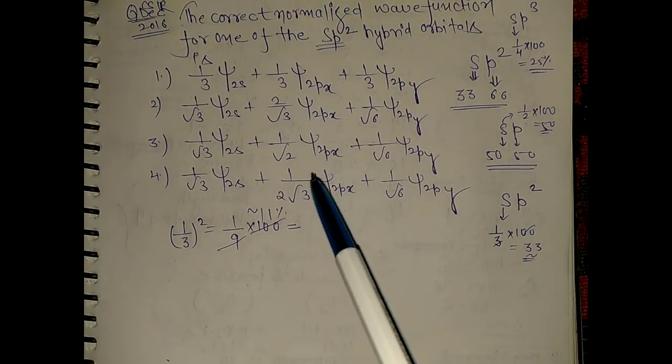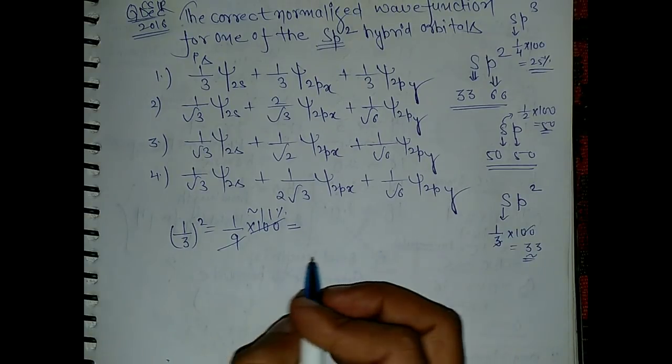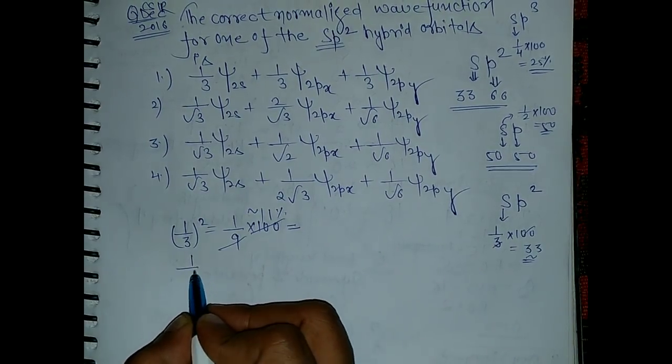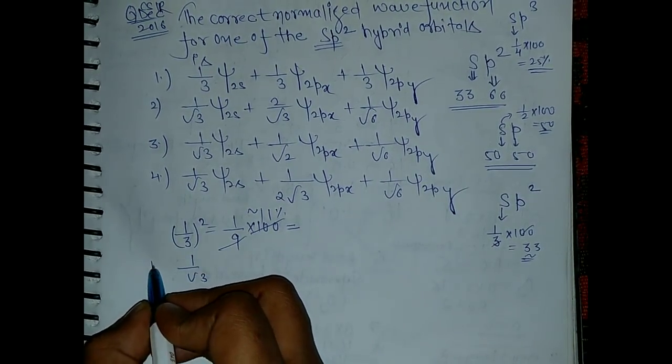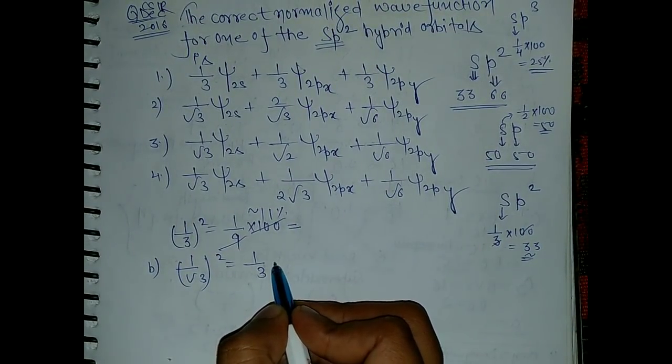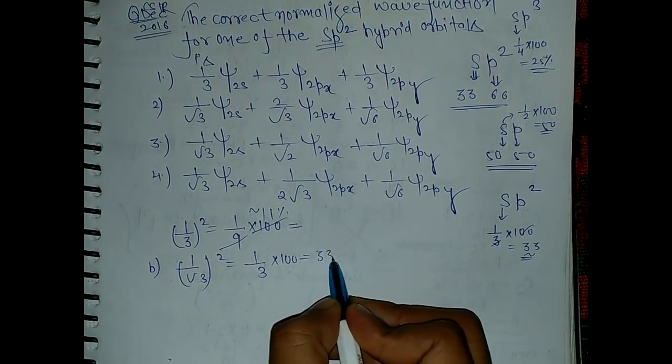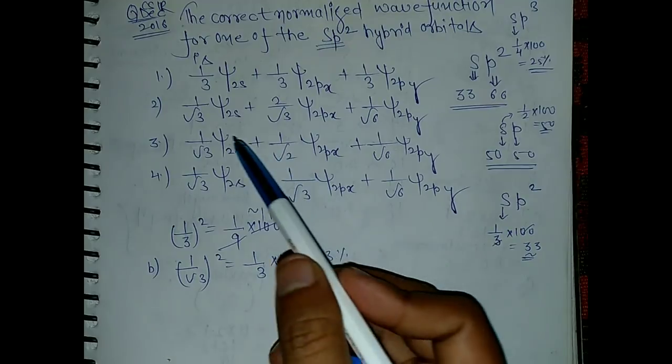Now see the second option, this is 1 by root 3. I am writing this is 1 by root 3 for b option. So if you take a square it will be 1 by 3, and it will be into 100, so this is around 33%, so this is correct.